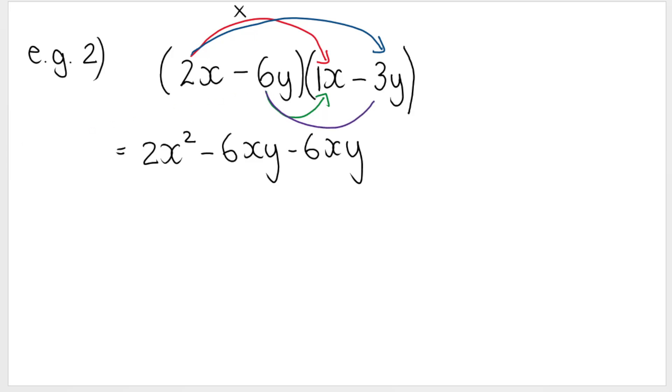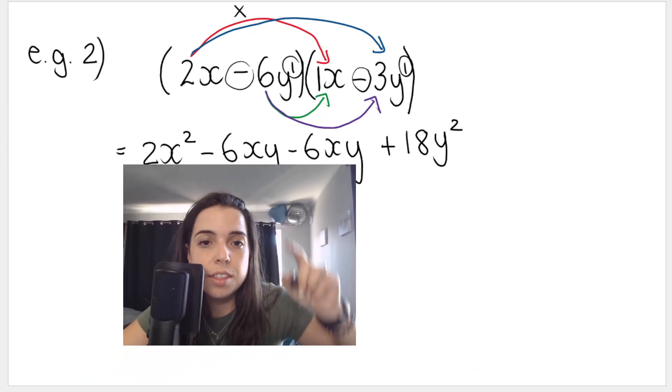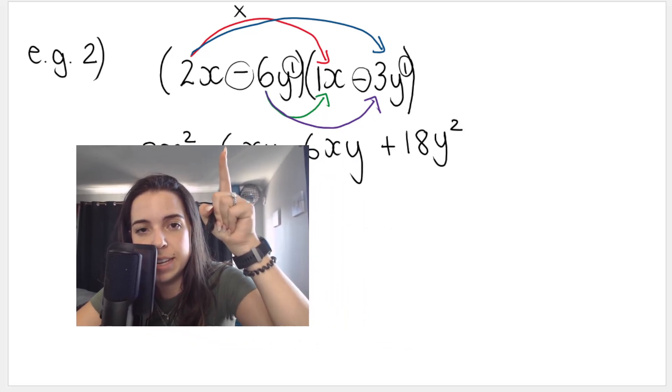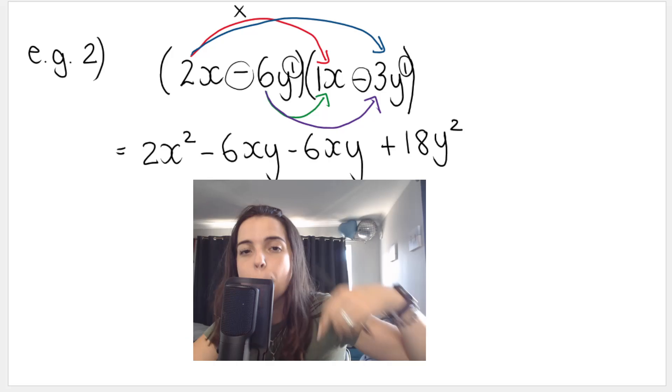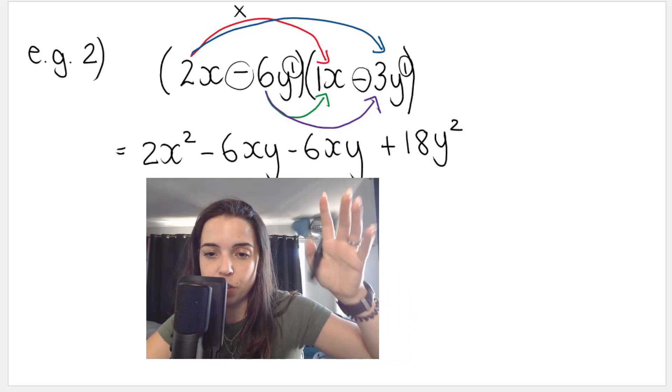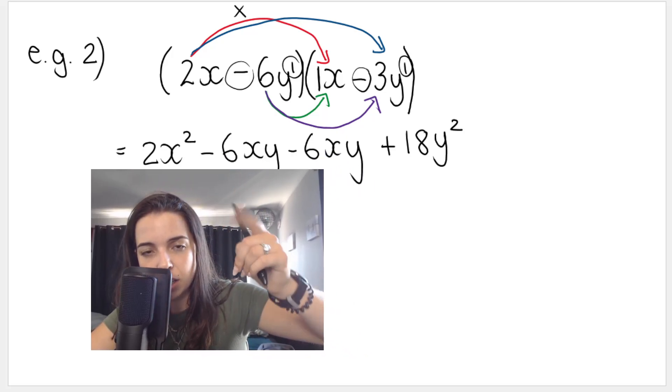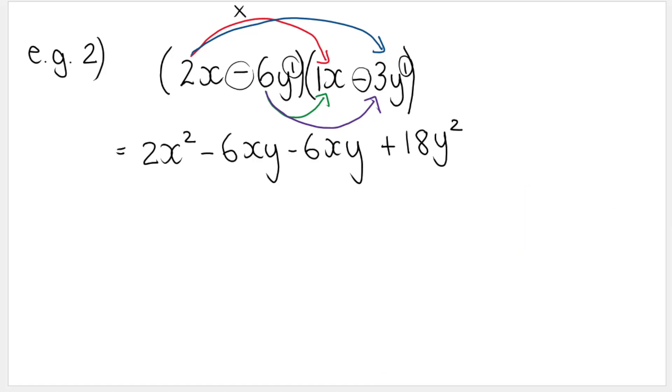And then we do our last. So negative six y times negative three y. Remember, a negative times a negative is a positive. Six times three is 18. Y times y. Remember, you keep the base. You add the exponents. One plus one is two. Then we need to do like terms. And in this case, this x y and x y. These are like terms. So you have negative six of them minus another six. With integers, sometimes my classes get confused. I say negative six. You owe someone six rand. Then you owe them another six rand. So how much do you owe them in total? You owe them 12 rand. So negative 12 x y. And then the x squared and the y squared don't have any friends. So just carry it down.